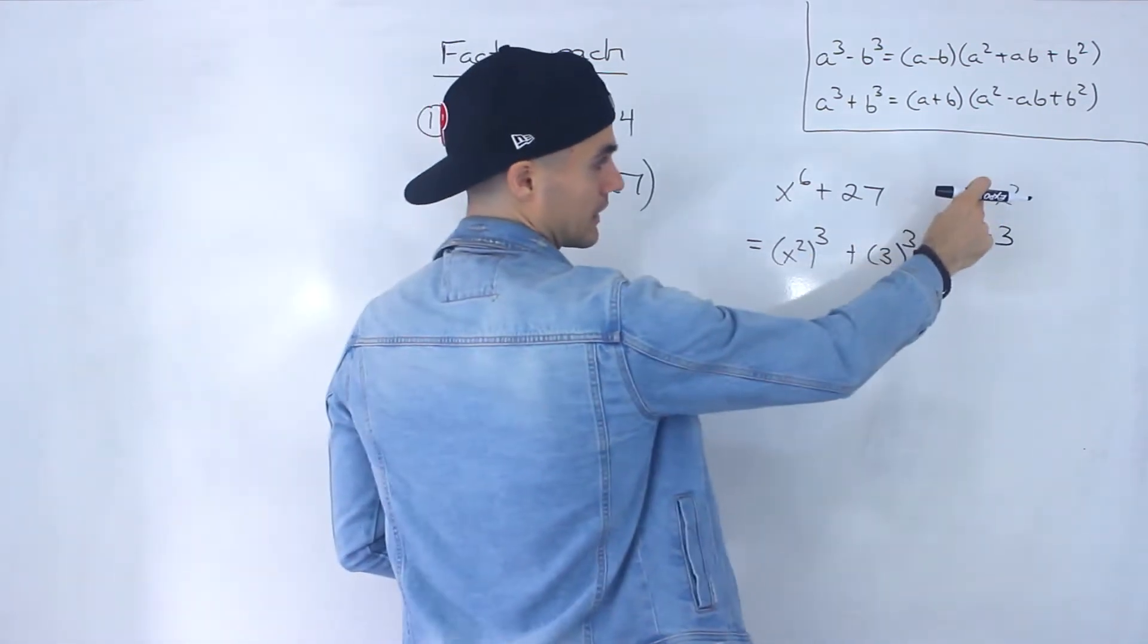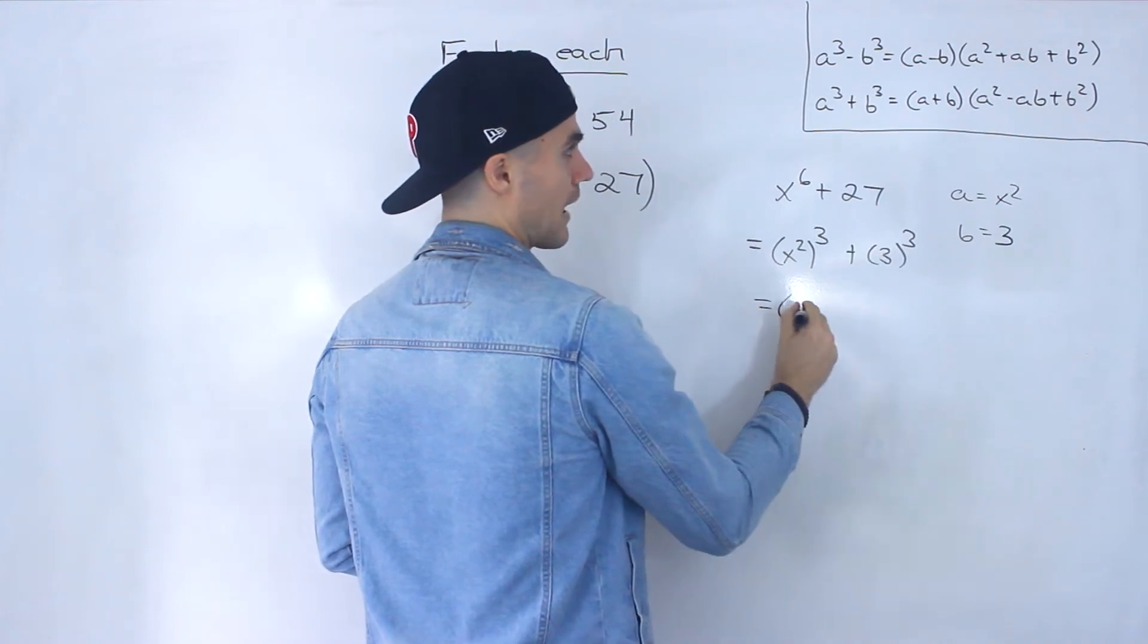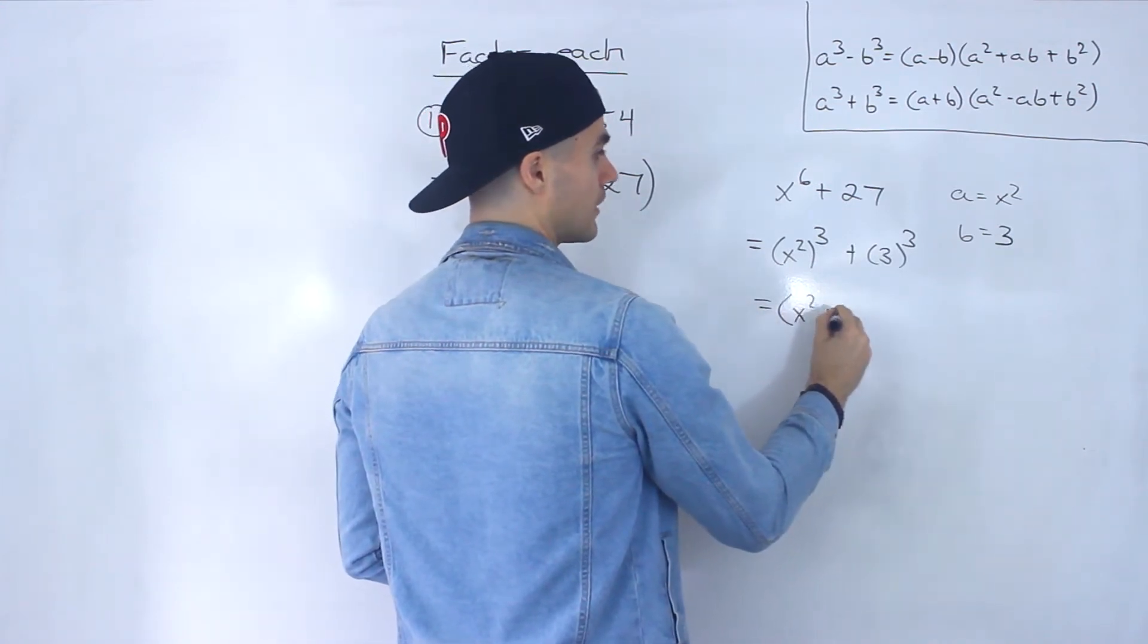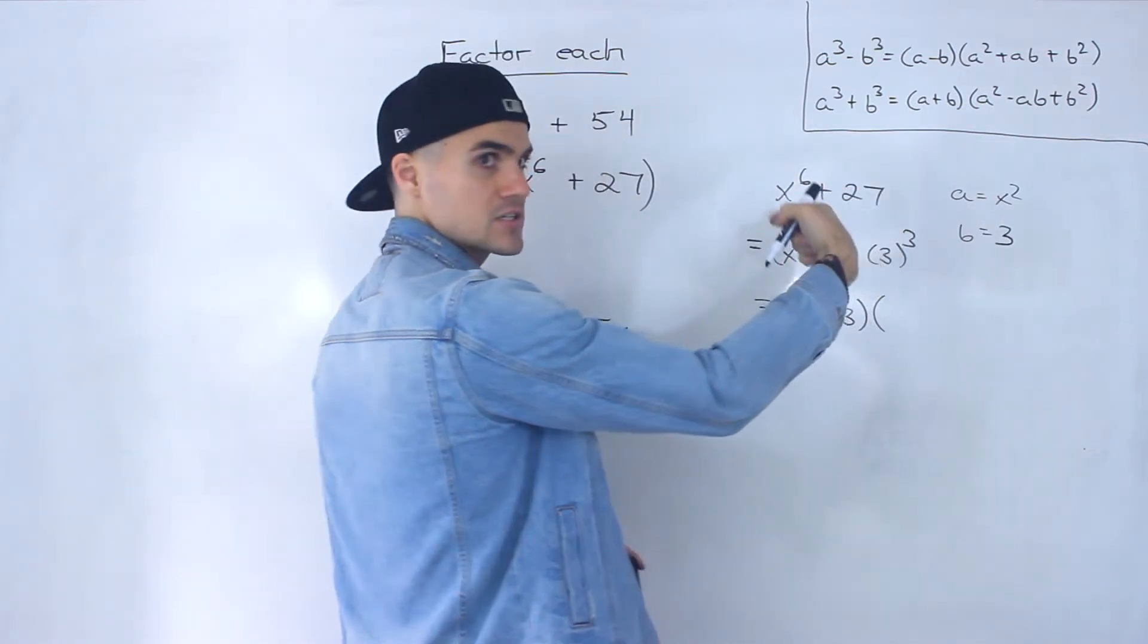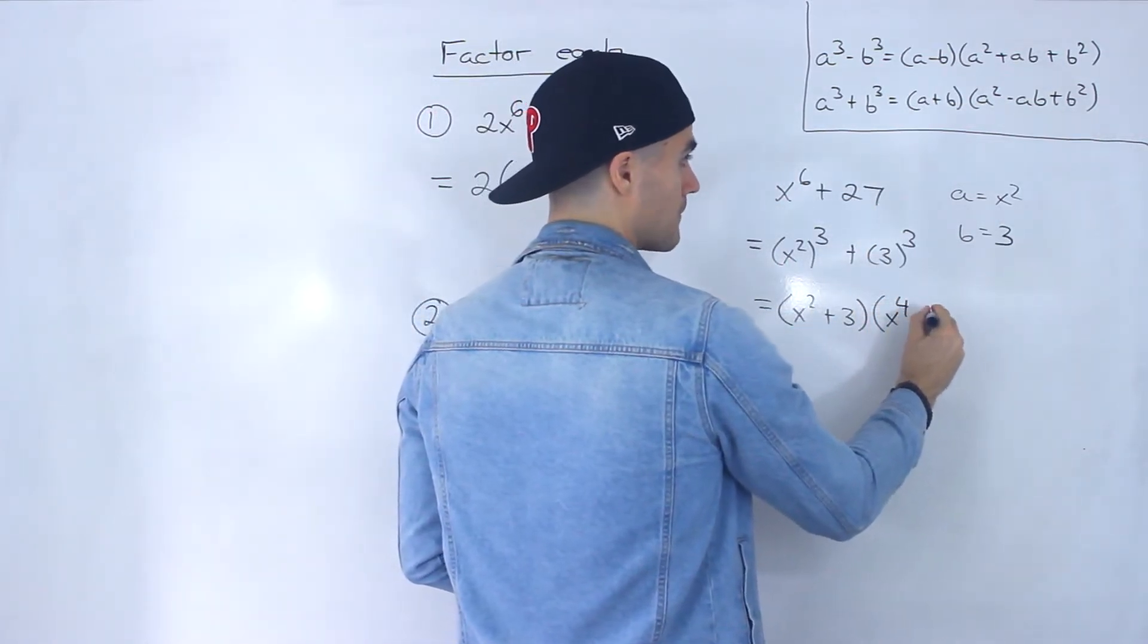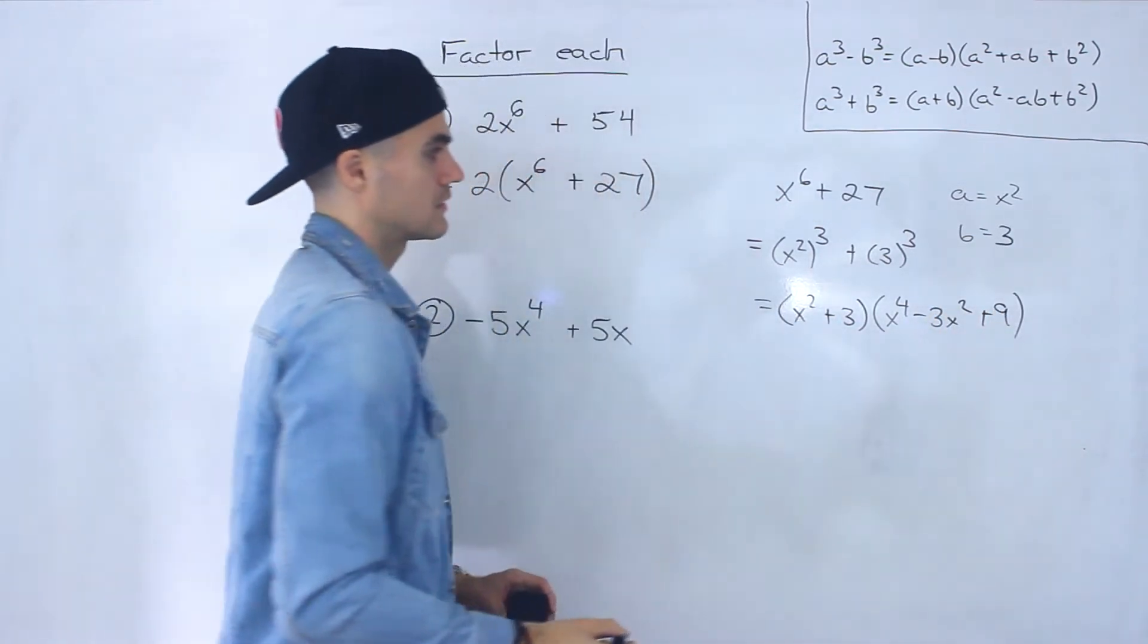So now all we got to do is plug in these respective a and b values into this formula here. So we'd have x squared plus 3 and then we'd have a squared. So x squared to the power of 2 is x to the 4 minus 3x squared plus 9.